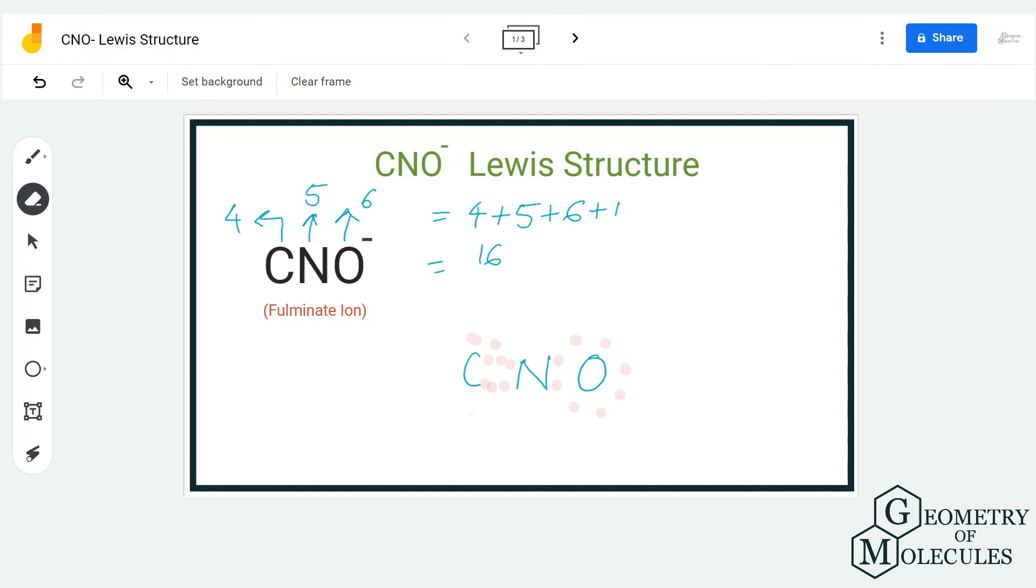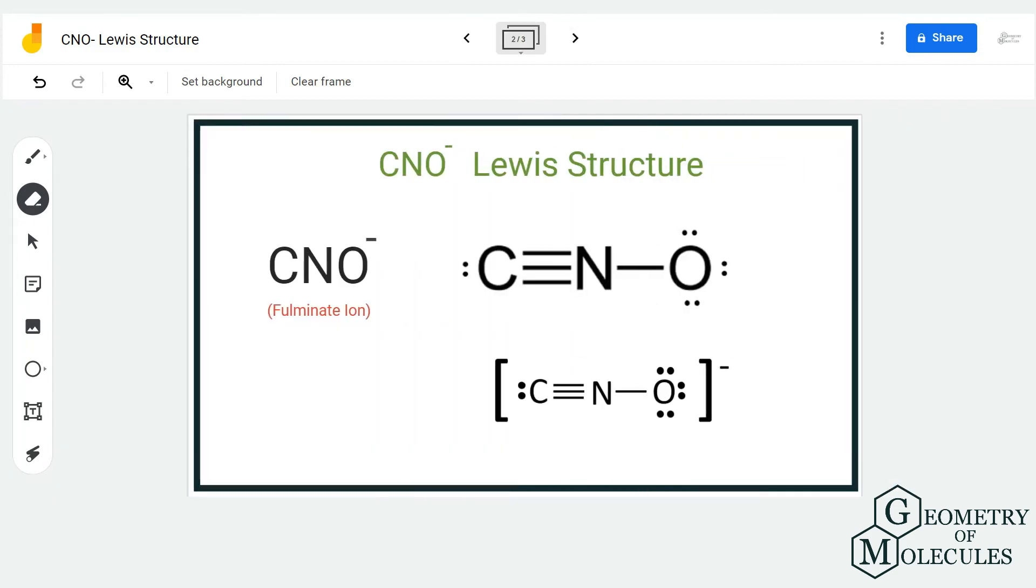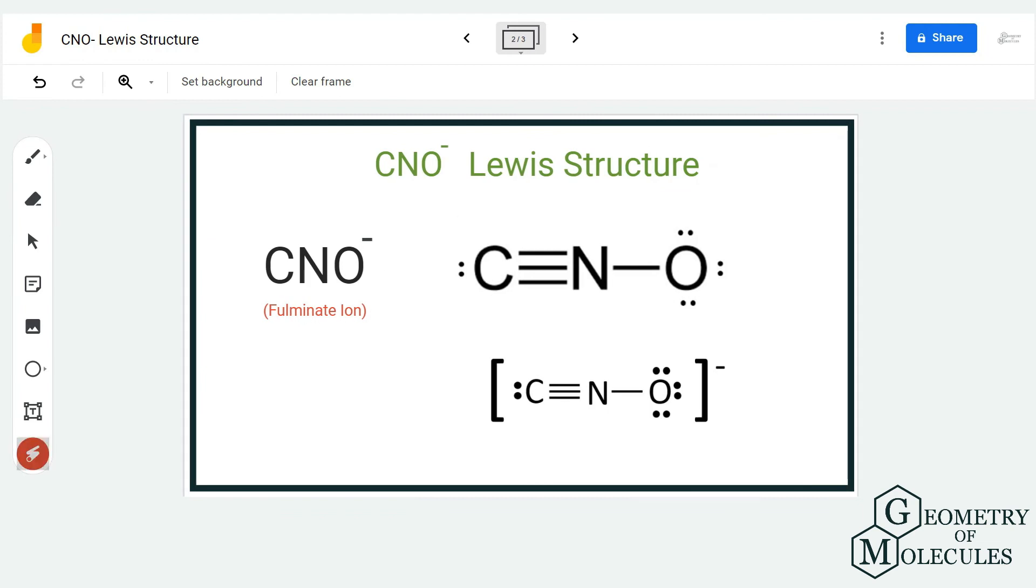Now carbon has eight valence electrons, nitrogen has eight valence electrons, and even oxygen has eight valence electrons. So as all the atoms have a complete octet, this is the relevant Lewis structure for CNO minus ion.